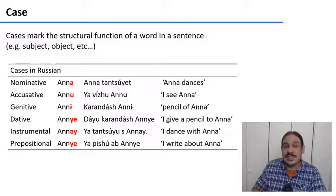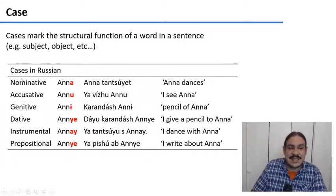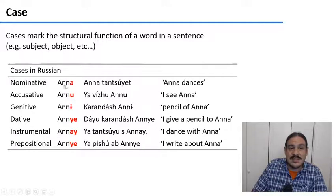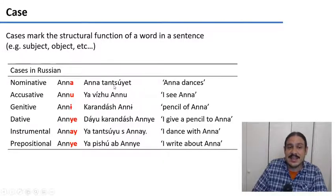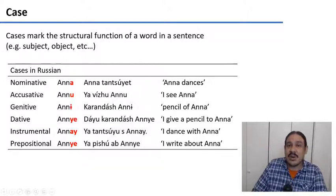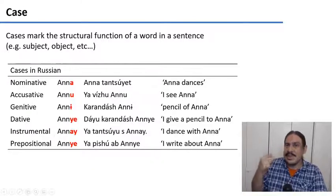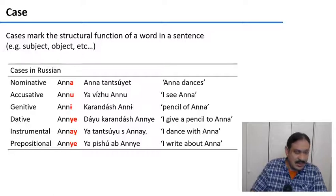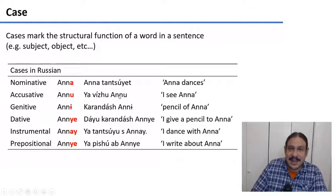For example, Russian has six cases. The nominative tells you that a word is the subject of the sentence — as in 'Anna dances,' she is doing the action. The accusative tells you the direct object, who the action is being done to — as in 'Ya vizhu Annu,' meaning I see Anna, where Anna is the one being seen.